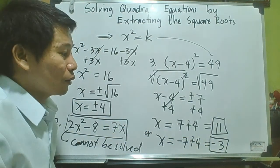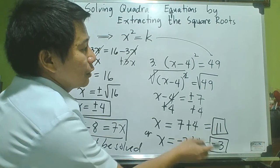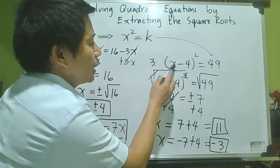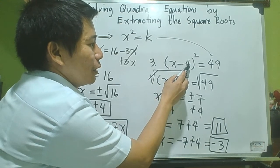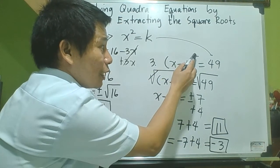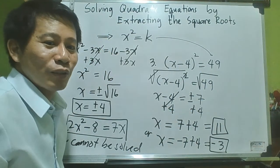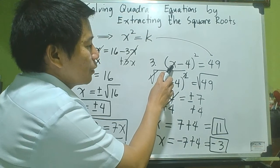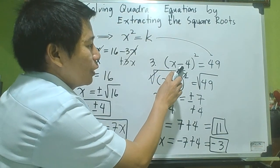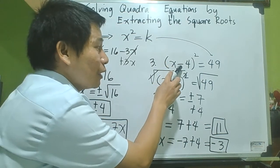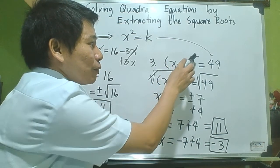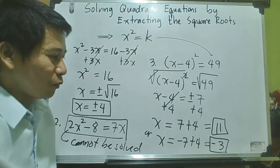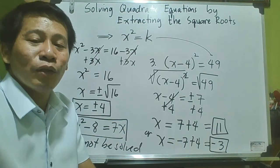You may check by replacing these roots in x. If x is 11: 11 minus 4 is 7, and squaring gives 49 — it satisfies the equation. If x is negative 3: negative 3 minus 4 is negative 7, and squaring negative 7 also gives 49. Therefore, 11 and negative 3 are confirmed as our roots or solutions.